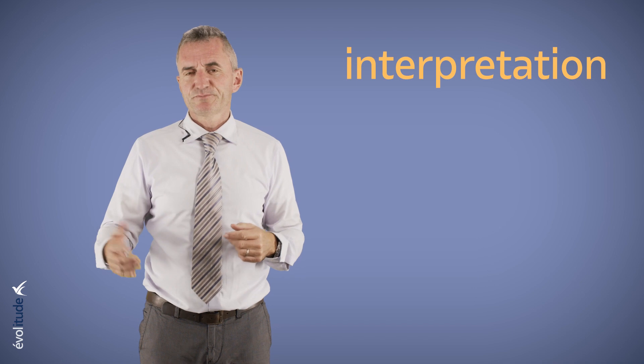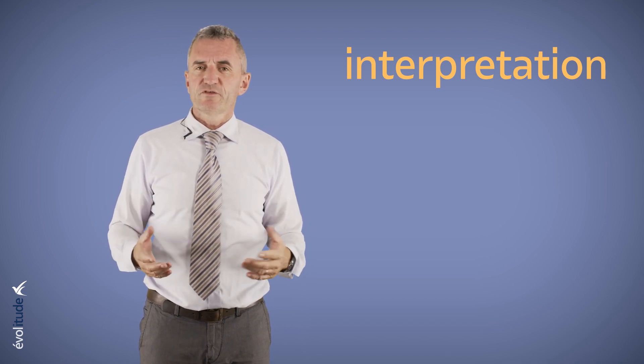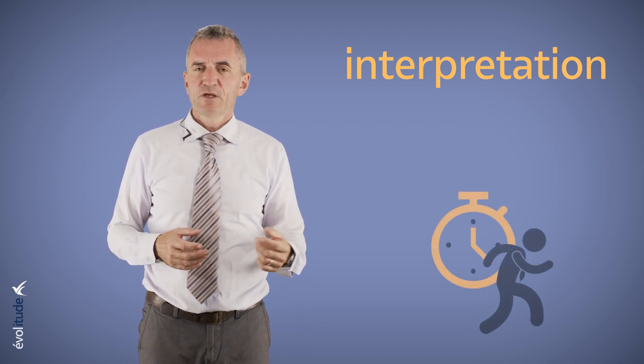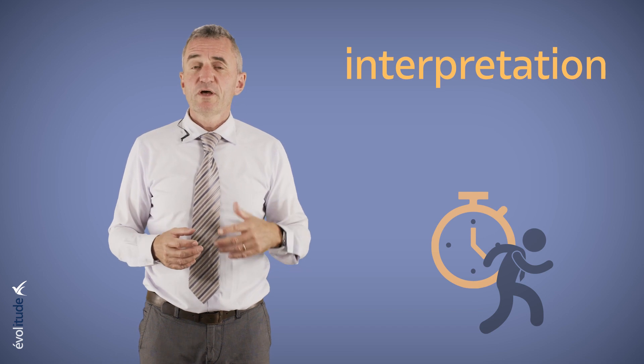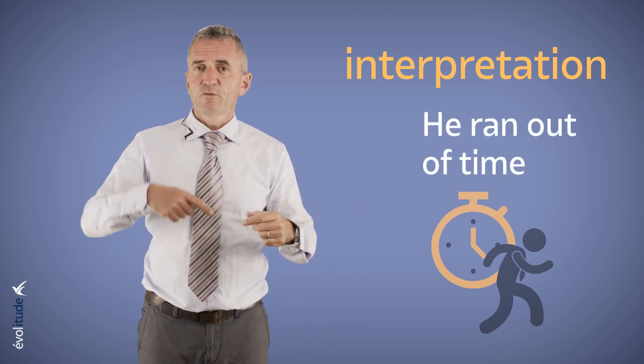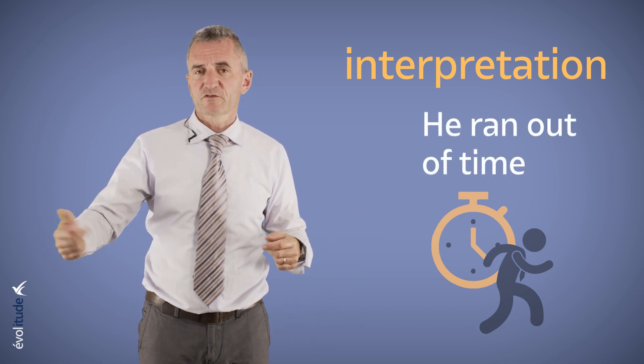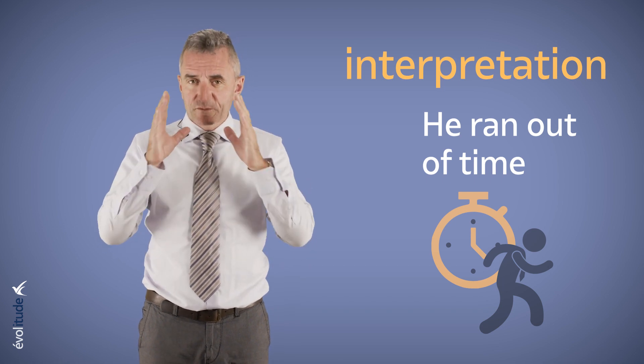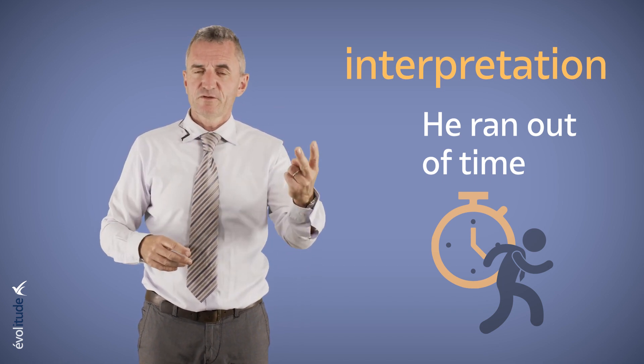Distortion. Interpretation. According to your references, you will interpret this delay. You can tell yourself, for example, that Alan ran out of time, or that he is not interested in his task, or that he has personal problems that prevent him from focusing. Second filter.